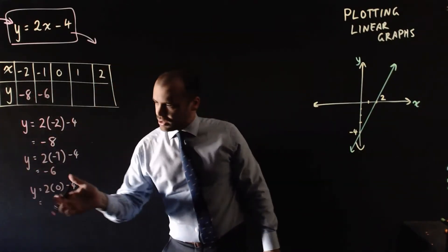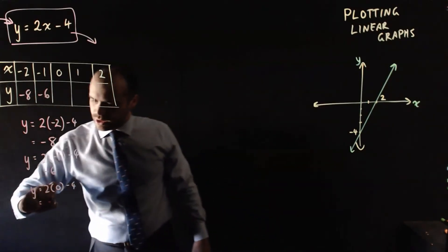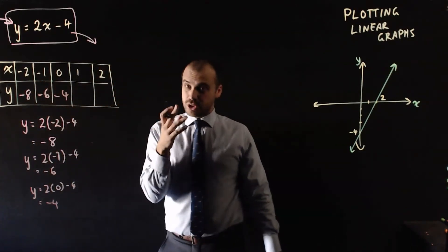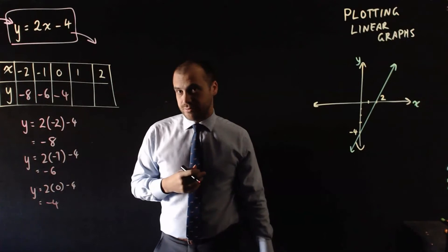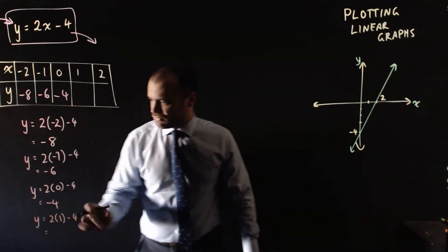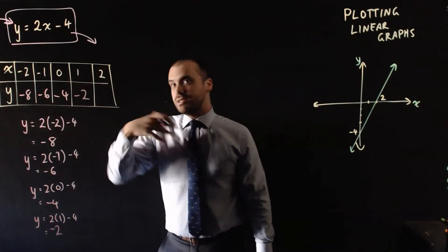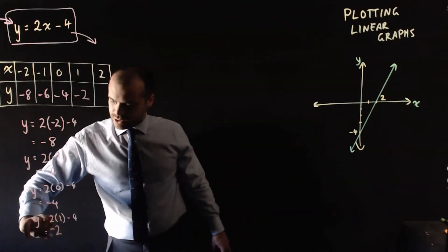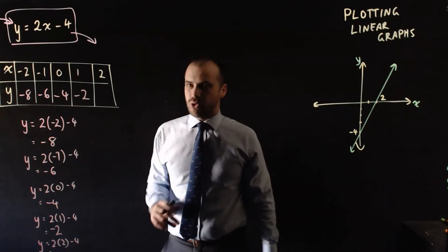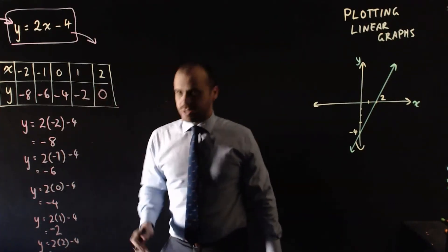Let's do a couple more. y equals 2 times 0 minus 4. 2 times 0 is 0, minus 4 is minus 4. Now you should see a pattern emerging. You should guess at what the next number is going to be. y equals 2 times 1 minus 4, which is negative 2. And 2 times 2 is 4, minus 4, which is 0.